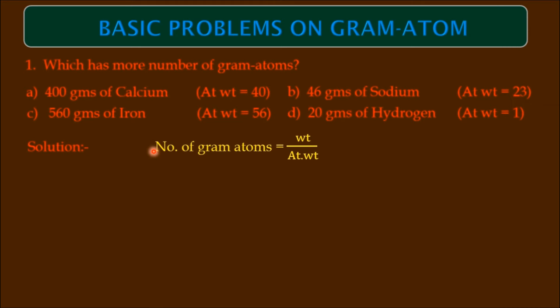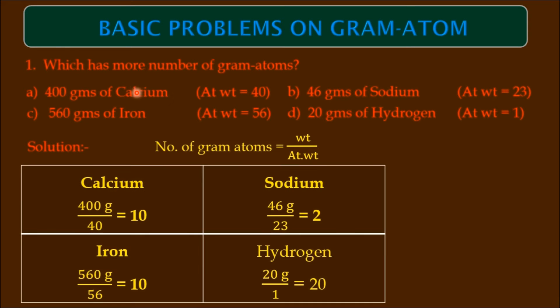The solution is: number of gram atoms equals weight in grams by atomic weight. Let us take calcium first. 400 grams divided by atomic weight 40, then we get 10.